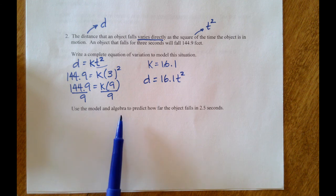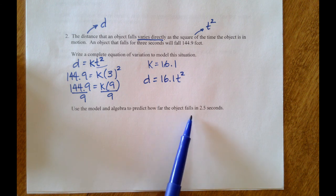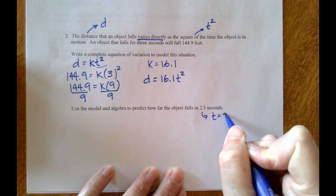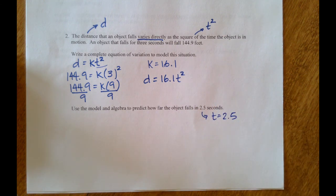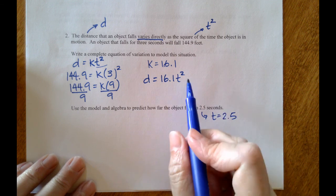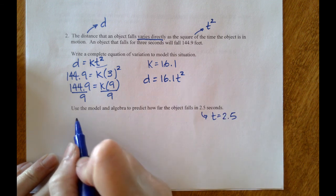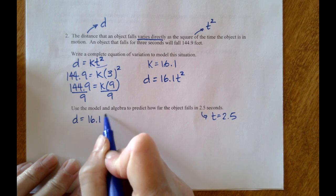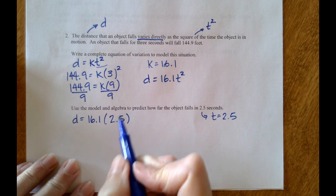Then use the model in algebra to predict how far the object falls in 2.5 seconds. 2.5 is a t value. We will take that t value and plug it into our very specific equation to find the distance: d equals 16.1 times 2.5 squared.